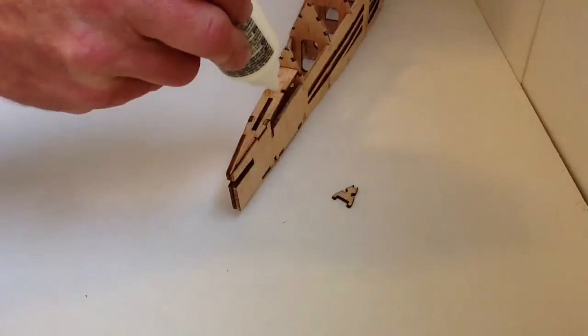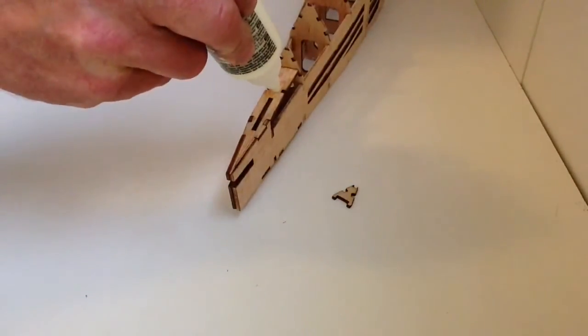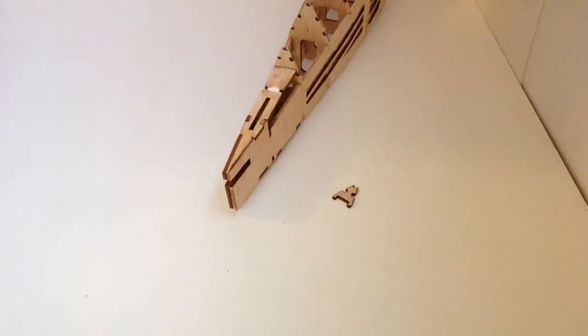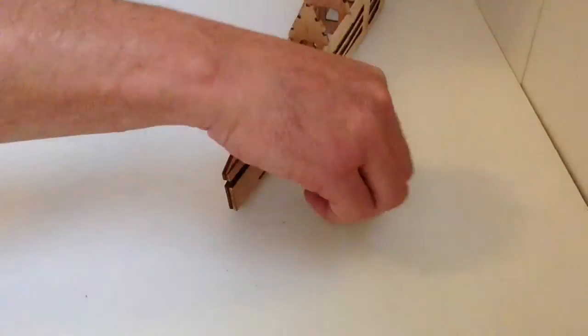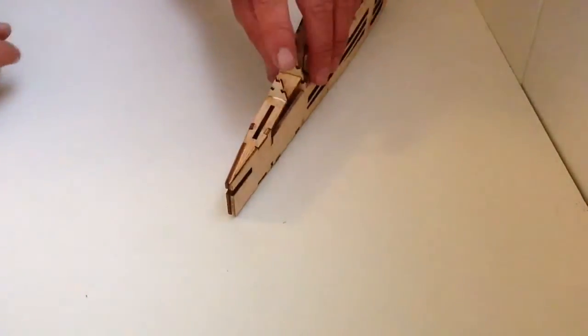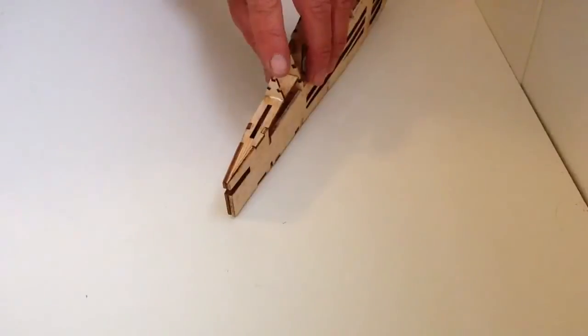Once that's dried, take your final section from a previous issue. Just apply a little bit of wood glue like so, and then place that there.